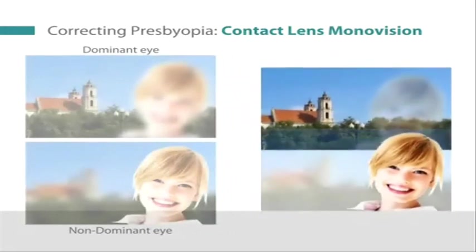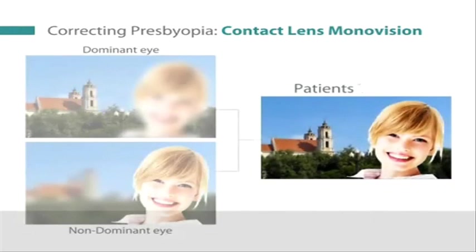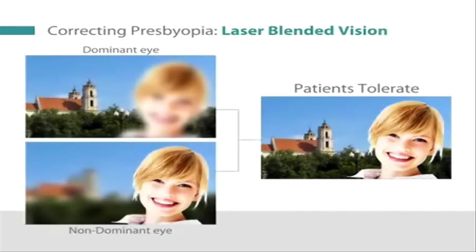This makes traditional monovision much less tolerated than laser-blended vision. Published reports found that traditional monovision was tolerated by about 60% of patients, whereas laser-blended vision, where the relative blurring in each eye is reduced, has been found to be tolerated by about 97% of patients.